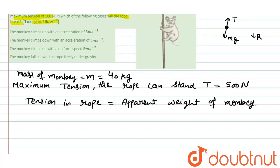Like in the first case, when monkey climbs up with acceleration A equal to 5 meter per second squared.